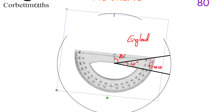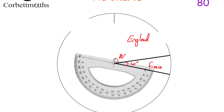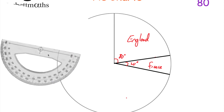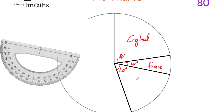We rotate our protractor again with the center on the center of the pie chart and the zero on the line we've just drawn, then measure all the way around to 60 degrees. We move our protractor and mark on that line. I like to put in the angle — 60 degrees — because it can be useful later if we want to find what fraction of the fans support Ireland. And that's for Ireland.